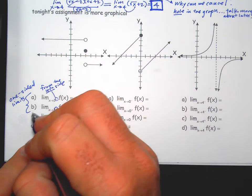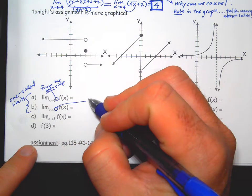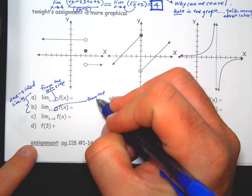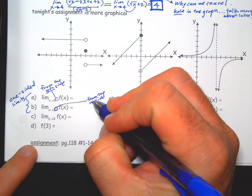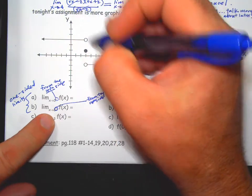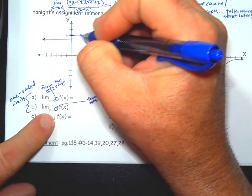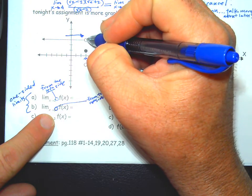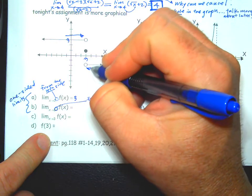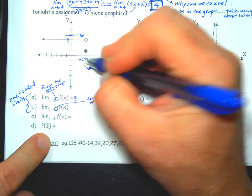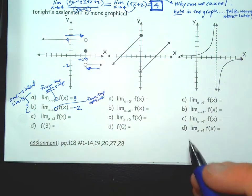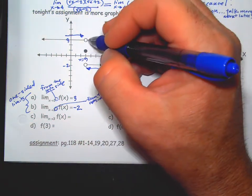The superscript plus means from the positive side, from the right side. So like on this problem here, we're approaching 3. From the left side, the value is... From the right side, as we approach x equals 3, the y value is approaching negative 2.